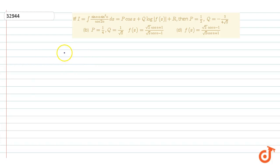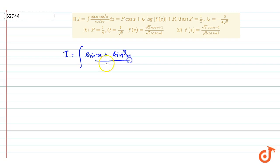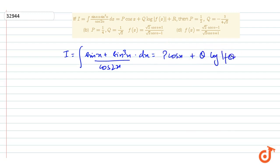In this question, we are given that the integration I equals sine x plus sine cube x upon cos 2x, dx, equals p cos x plus q into log of f(x) plus r. Then we have to find the value of p and q. For that, we have to find this integration, so let's start.